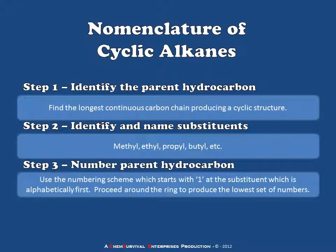In the third step, we'll number the parent hydrocarbon using a scheme which starts with a 1 at the substituent which is alphabetically first, and then proceeds around the ring in such a way as to produce the lowest set of numbers overall.